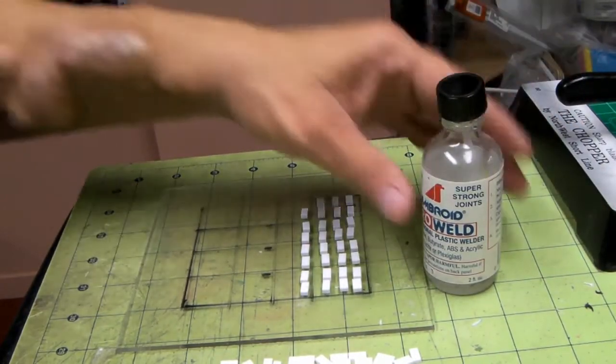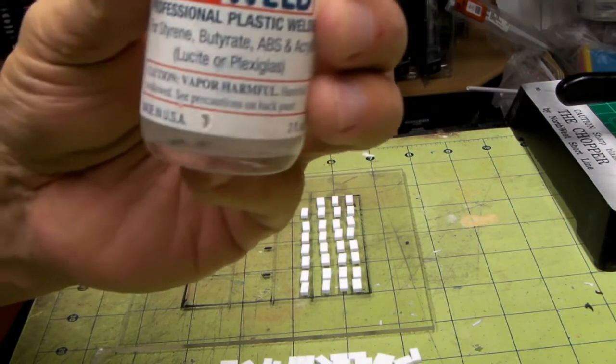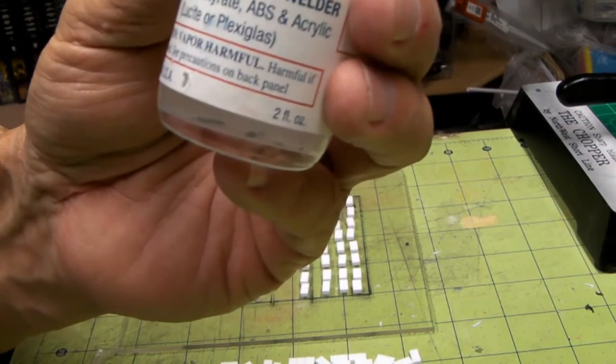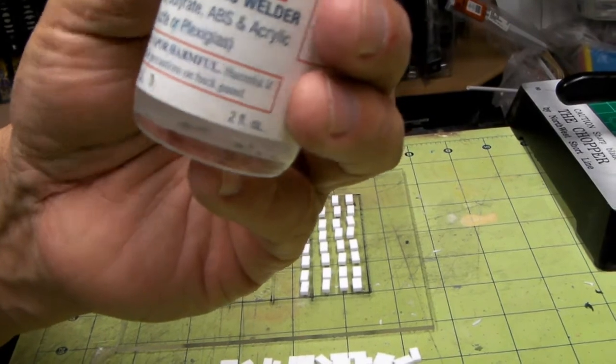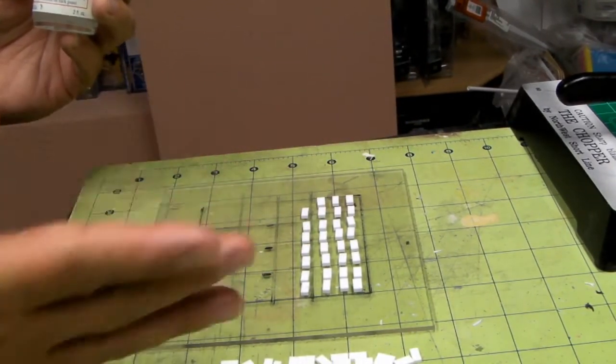Ambroid Pro, well, professional plastic welder, good for styrene, butyrate, ABS, acrylic, lucite, and plexiglass. So we got everything right here.